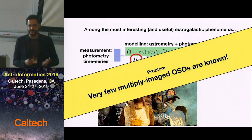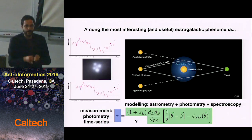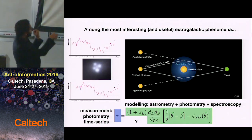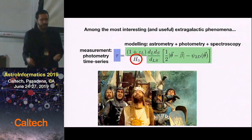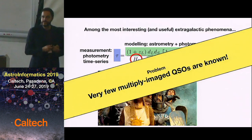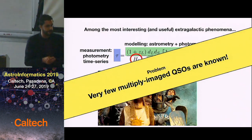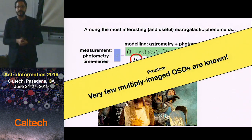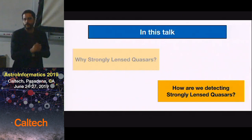The most important lensed quasars are the quadruply-imaged ones — like the Einstein Cross, where you can see four images of the quasar. They are very good for constraining the lens model. But until last year we only knew 45 or 46 that were spectroscopically confirmed as of the Gaia data release 2. So we are developing ways to detect new quadruply-imaged quasars.